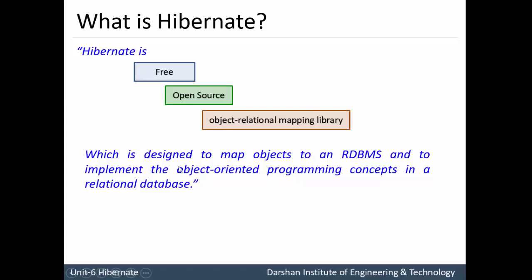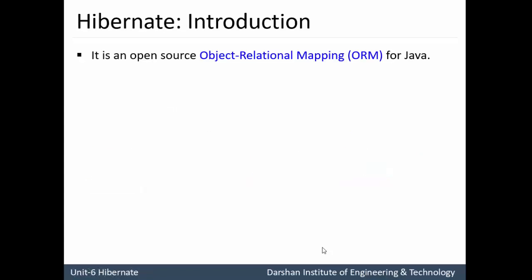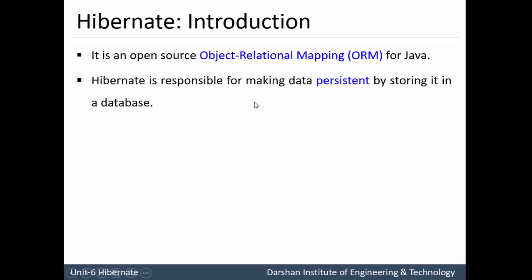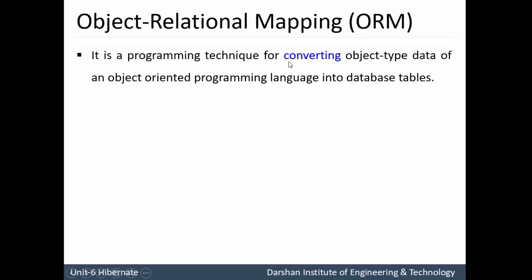Hibernate implements the object oriented programming concept — that is, our Java programming — in a relational database. Such mapping is created with the help of an object relational model. Hibernate is an open source ORM for Java, responsible for making data persistence, meaning storing Java objects in a database persistently. This ORM is a programming technique for converting object type data of an object oriented programming language like Java into database tables.